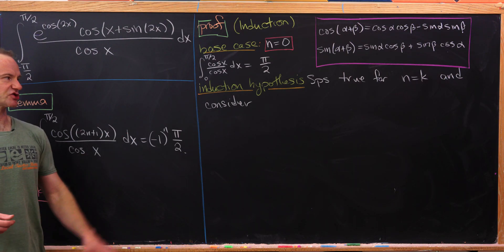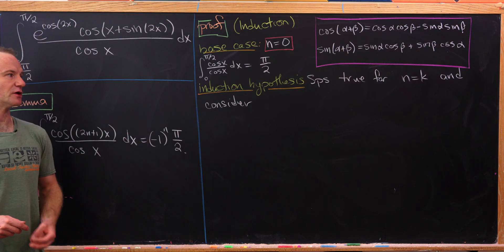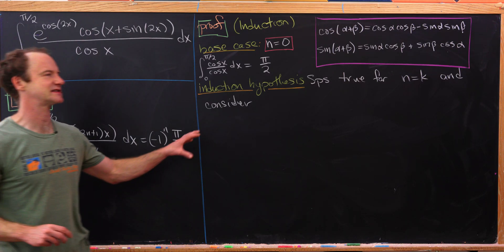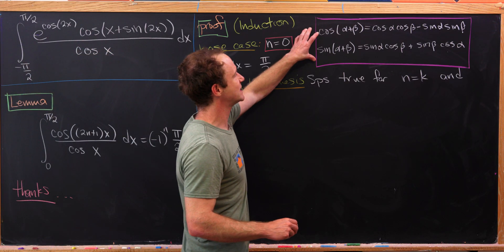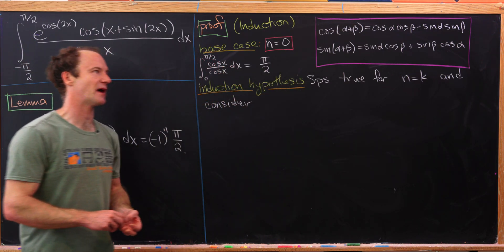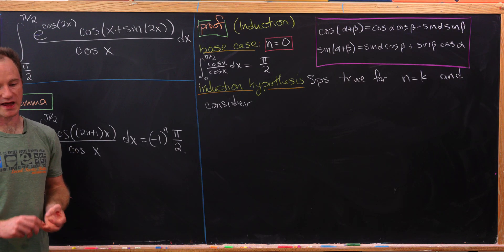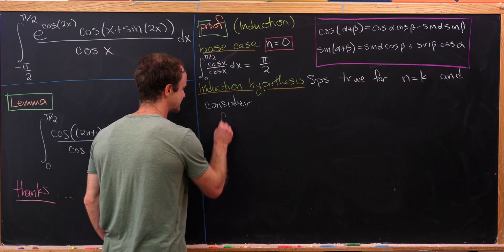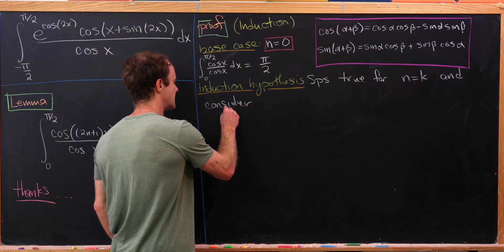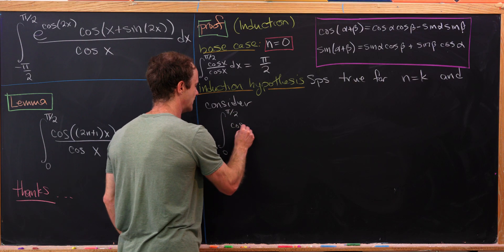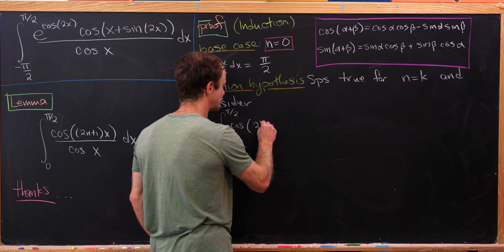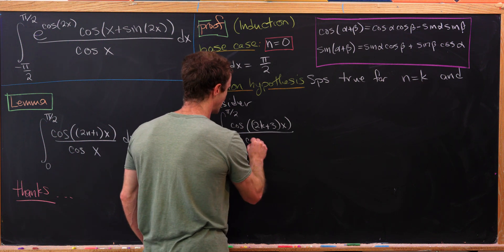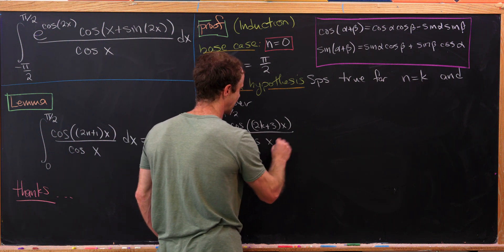Now let's make an induction hypothesis: we suppose the lemma is true for n equals k and consider the next case. We'll use sum-angle formulas along the way. The next case is the integral from 0 to pi over 2 of cosine of (2k+3)x over cosine of x dx.